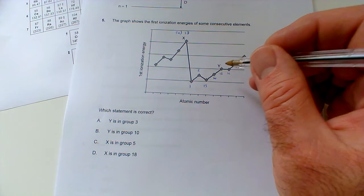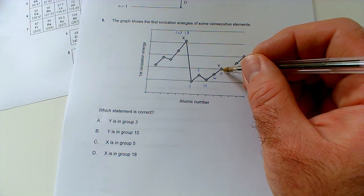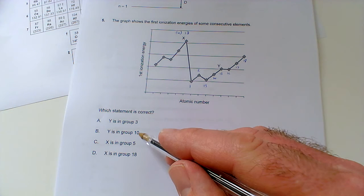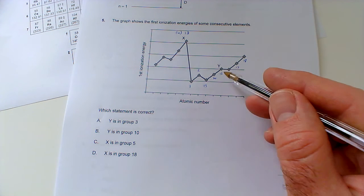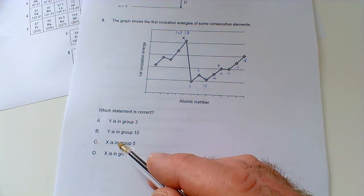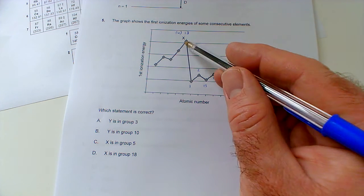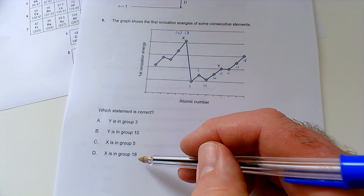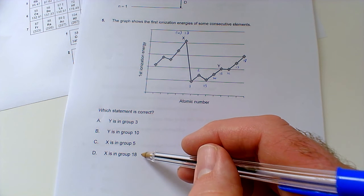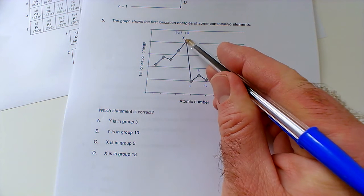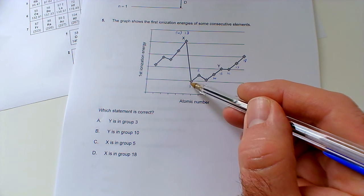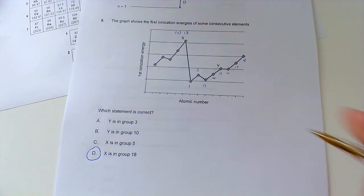So let's see what we've got. Y is in group three? Well I think Y is in group five with anything, or what we should call group 15. Y is in group 10? No, it's in group 15. X is in group five? No it's not. X is in group 18. Yeah that makes sense, group 18, otherwise known as group zero, the noble gases. Highest ionization energy, and then a sharp drop afterwards because we start a new shell. So it would be D.